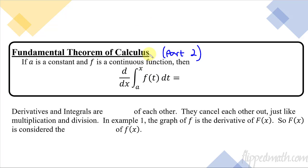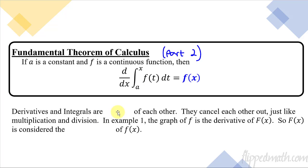It's okay if we learn it first — doesn't matter. I'm just referring to it as Part 2 because you might see it labeled that way elsewhere. So what this is: when you take the derivative of an integral going from a to an unknown variable, when you take the derivative of that, what you get — and this is crazy — is little f of x. So if you have an integral and you take its derivative, you get what's inside.